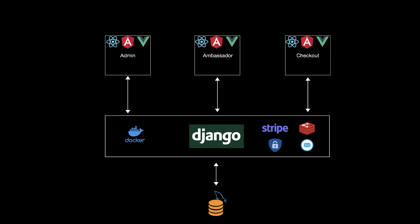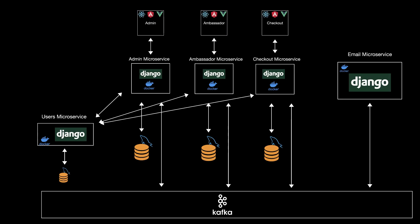After we break this app into microservices, the end result will look like this. Each front-end app will consume its own microservice — the admin front end will consume the admin microservice, the ambassador front end will consume the ambassador microservice, and the checkout front end the checkout microservice. They will all communicate with another microservice called the users microservice, where it will store information regarding all the users in the app.